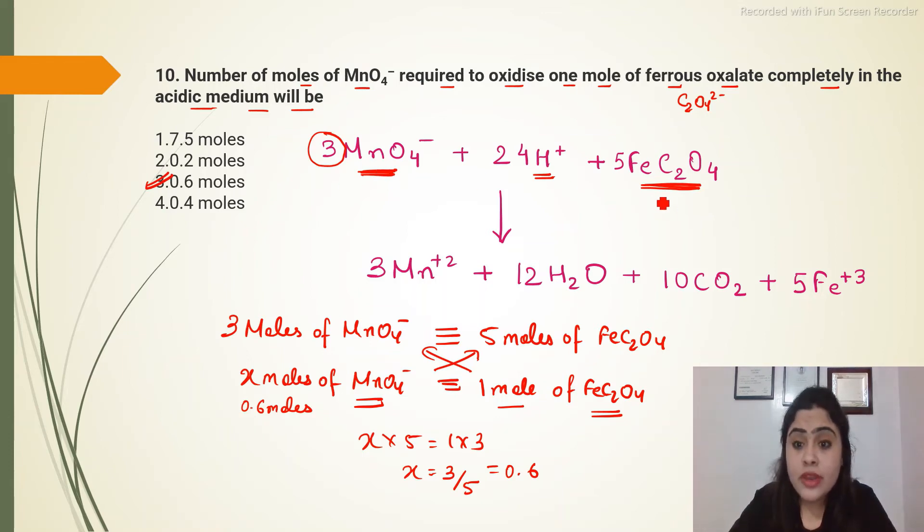Now how to remember this reaction, it is a long reaction, how do we do it again? It is very simple. Reacting to the MnO4- ferrous oxalate acidic medium. When MnO4 is oxidizing agent, what do we do?